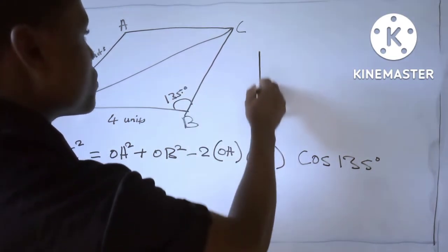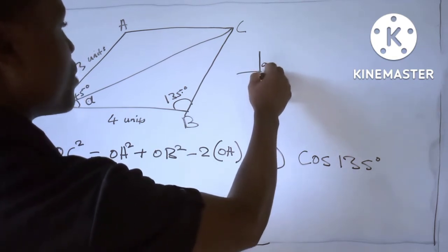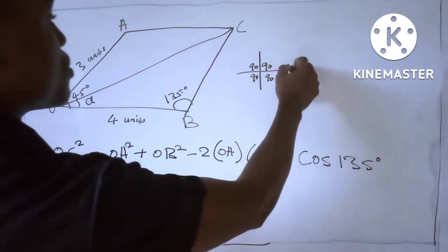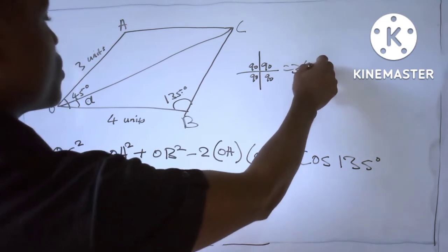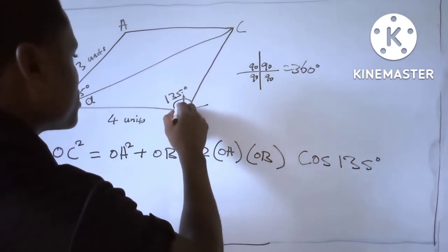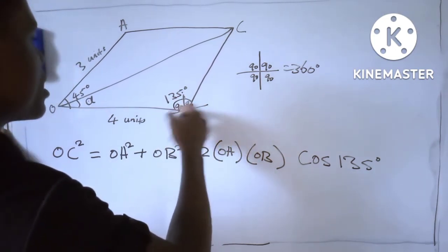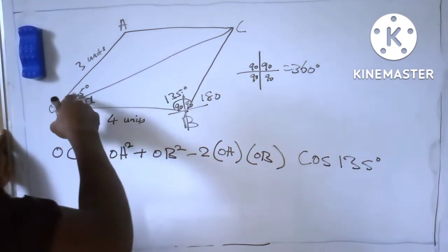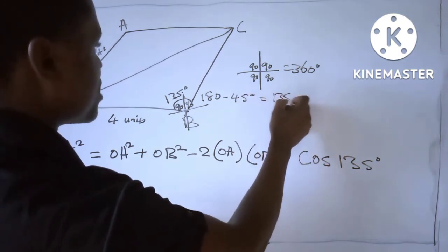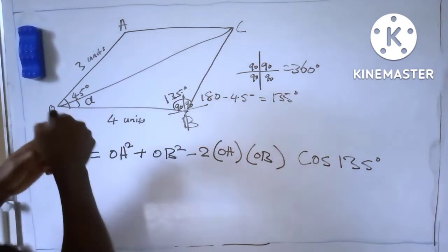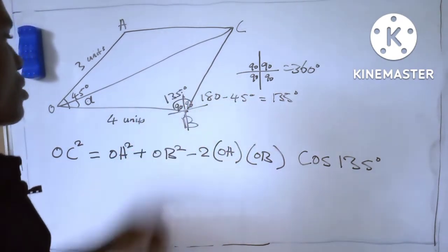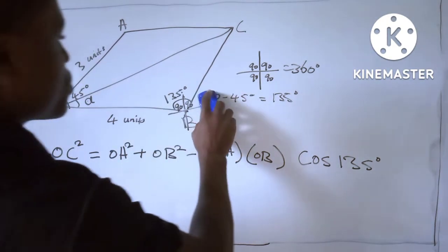Let me show you how we got this 135°. We have the four cardinal points — each gives 90°, and all four add up to 360°. Here we only have two angles: 90° and 90°, which add to 180°. So 180° minus 45° gives us 135°. That is how we get 135°.